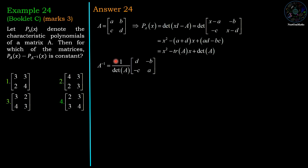Now A inverse is equal to 1 over determinant A times [[d, minus b], [minus c, a]], which is a shortcut for finding 2 by 2 matrices inverse.